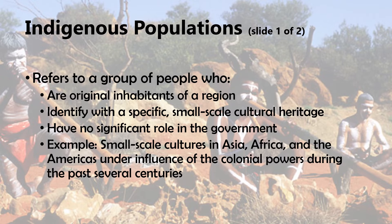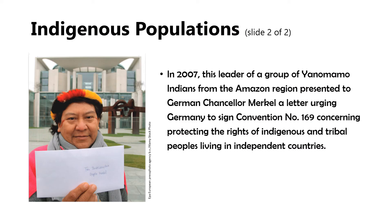A major example of harm to indigenous peoples resulting from colonization was the Berlin Conference in 1884–1885, which divided up the African continent's natural resources for European nations without any indigenous peoples being part of the process or the decision-making. It did not protect the rights of indigenous nations. The 21st century has presented additional challenges to the cultural survival of indigenous populations. In 2007, a leader of a group of Yanomamo Indians from the Amazon region presented to German Chancellor Merkel a letter urging Germany to sign Convention Number 169, concerning protecting the rights of indigenous and tribal peoples living in independent countries.